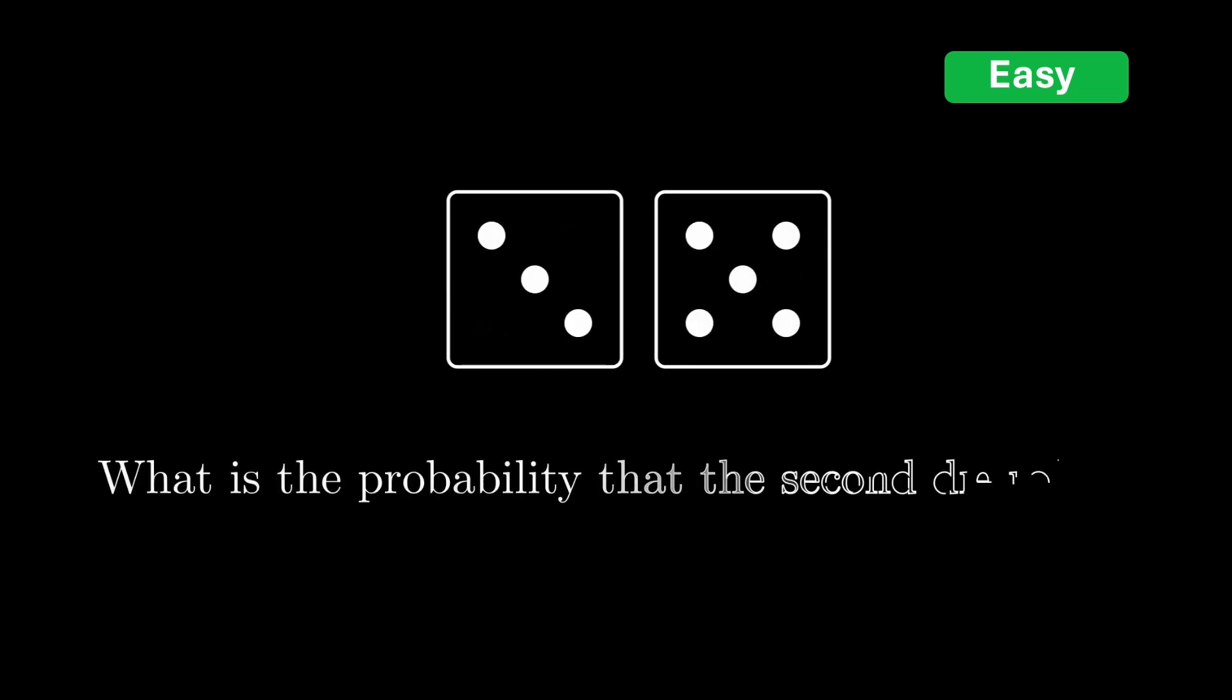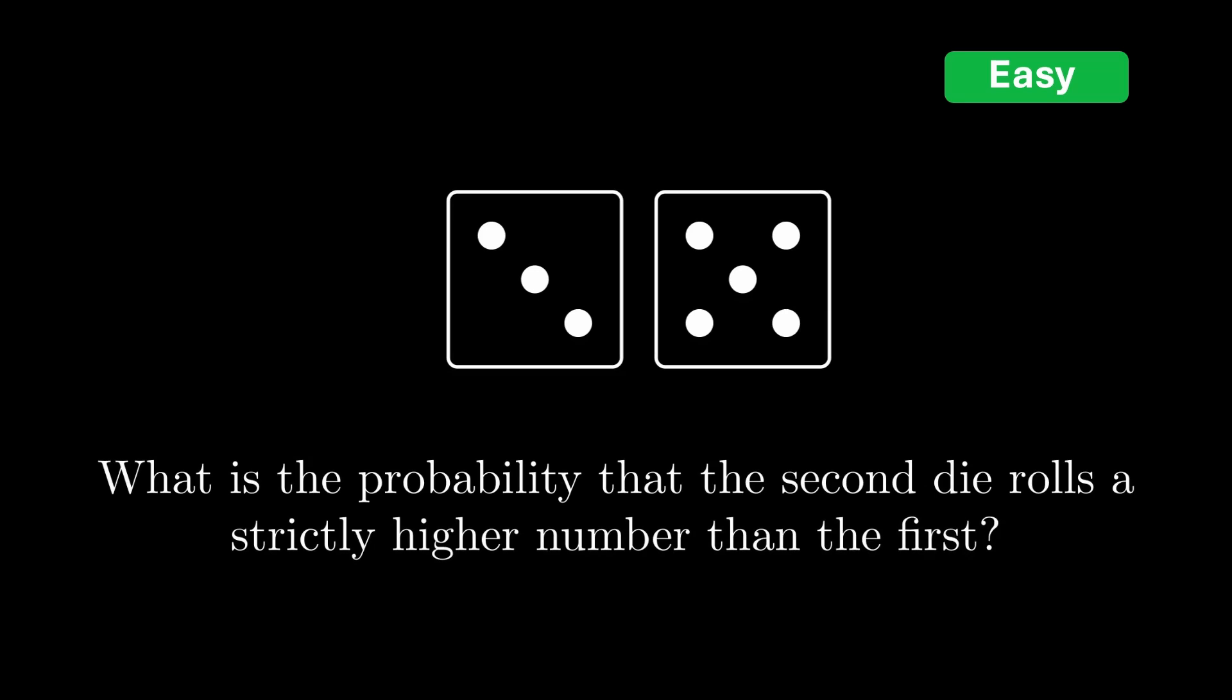Let's start with an ultra easy problem. Two fair six-sided dice are rolled. What is the probability that the second die rolls a strictly higher number than the first?